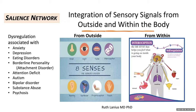If the salience network is dysregulated, this has been found in patients with anxiety, depression, eating disorders, borderline personality — which is essentially an attachment disorder — attention deficit, autism, bipolar disorder, and substance abuse and psychosis.